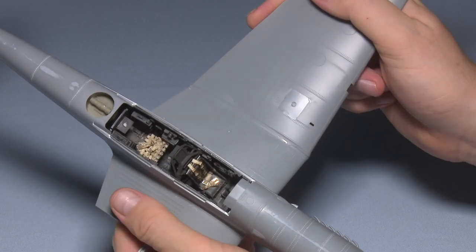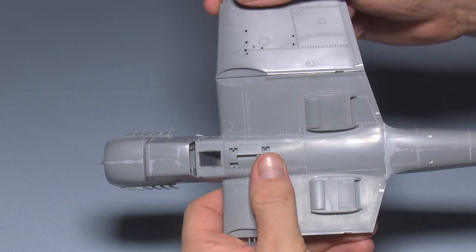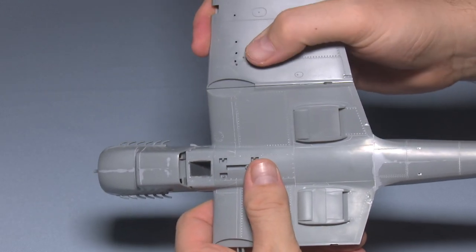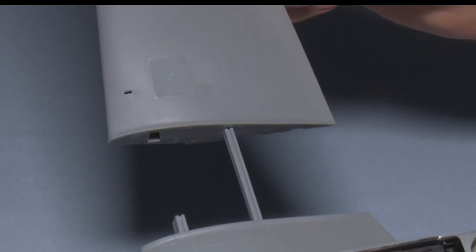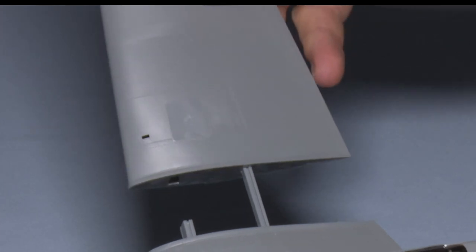When attaching the wings, extra care should be taken to make sure that the angle is correct, but also that it's got a solid join because sometimes the way that models can be handled is one hand on the fuselage and one hand on a wing.